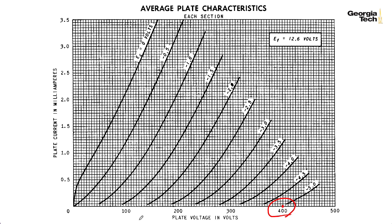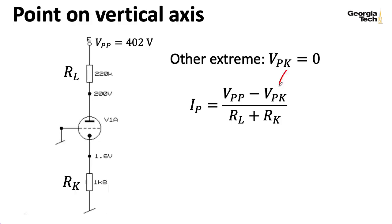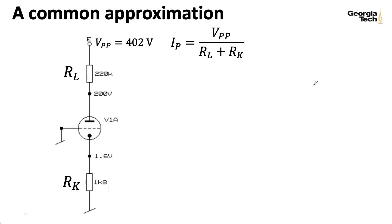Now, to draw a line, we're going to need another point. So let's pick a point that's associated with this vertical axis. Now, notice that this will be associated with a zone where the grid to cathode voltage is positive. So this is not a realistic place of operation. This is just a point we're plotting in order to draw a line. So at that extreme, the plate cathode voltage is zero. And so if we plug in zero for VPK, we wind up with VPP over RL plus RK. So that's something we can compute.